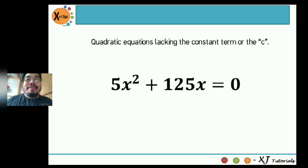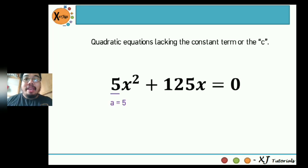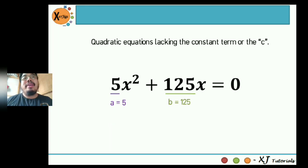Second example: 5x squared plus 125x is equal to zero. The value of a is positive 5, the value of b is positive 125, and c is zero.